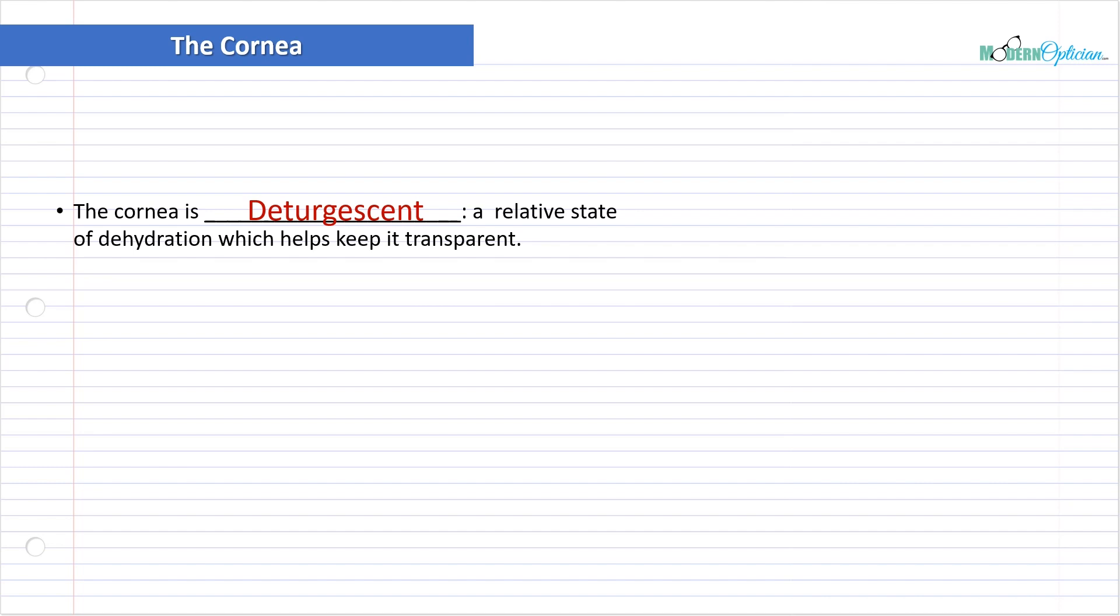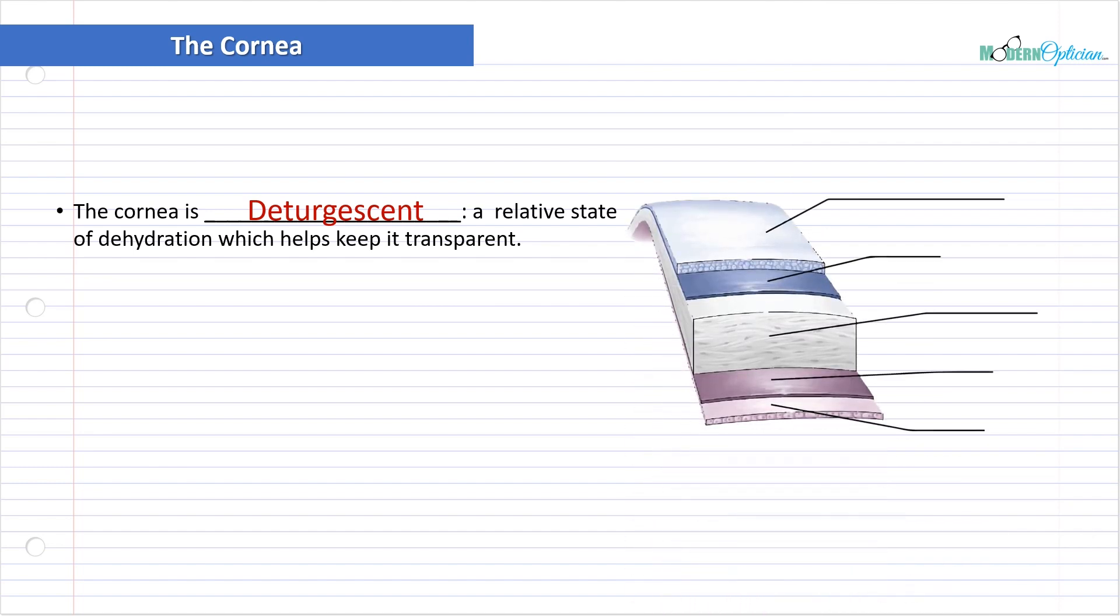If you ever have a corneal injury and it swells, vision starts to suffer because more fluid is in the cornea, and it doesn't allow it to do its refractive duties as well. This level of detergescence is not always maintained during injury. It's a very important concept in the cornea to maintain its ability to be transparent and refract light.